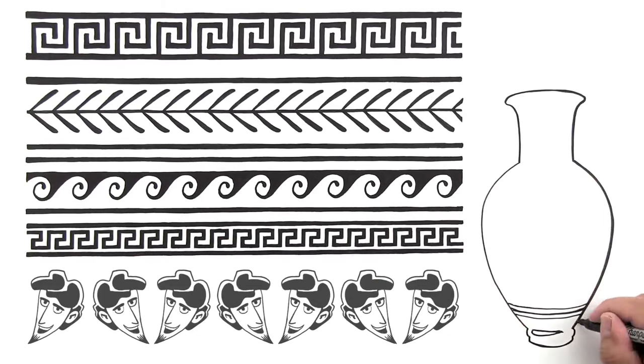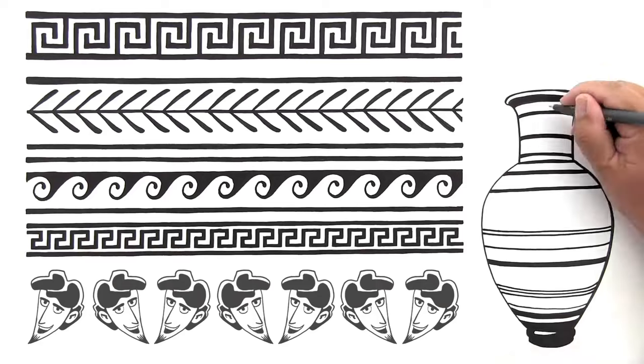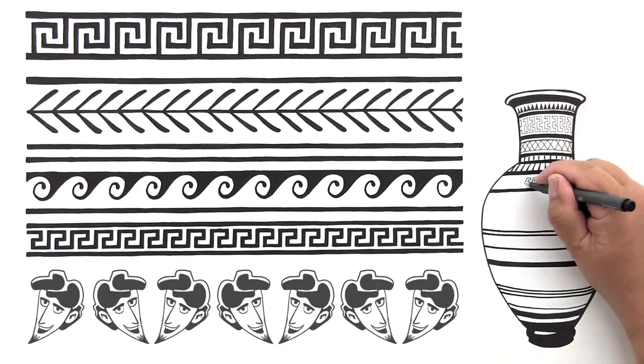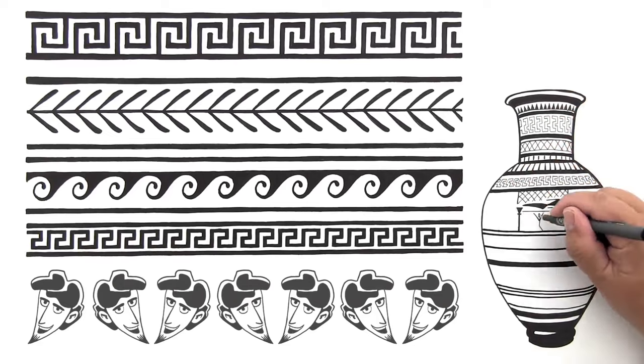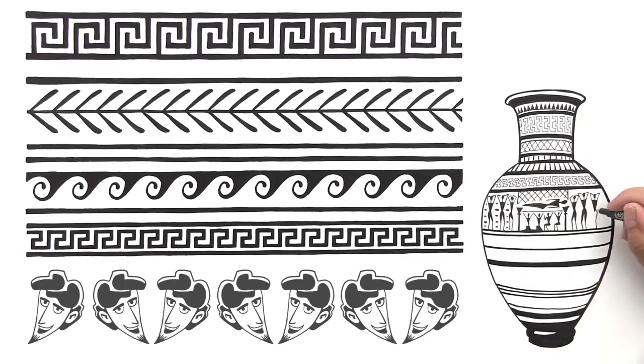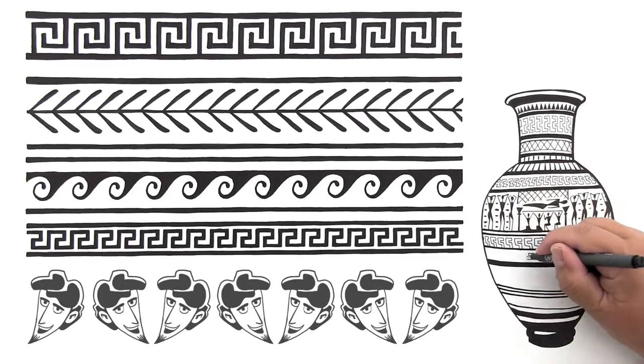Simple geometric designs were combined into a repeating pattern that circled the pot. Later, abstract figures of animals and people appeared. They used pots for storing wine and oil, for eating and drinking, as prizes at athletic games, and even as burial markers.